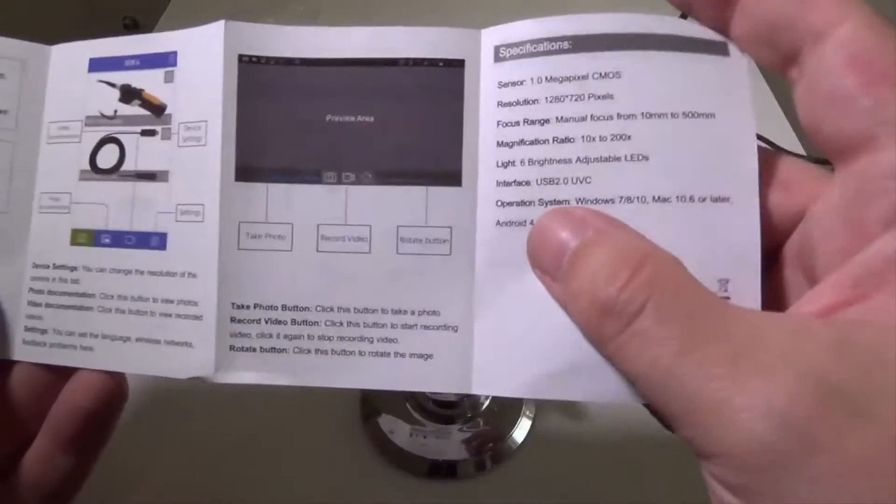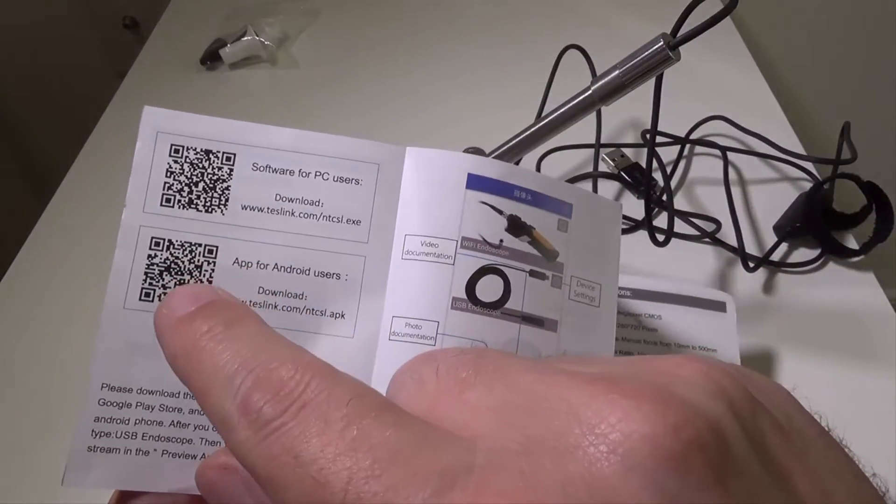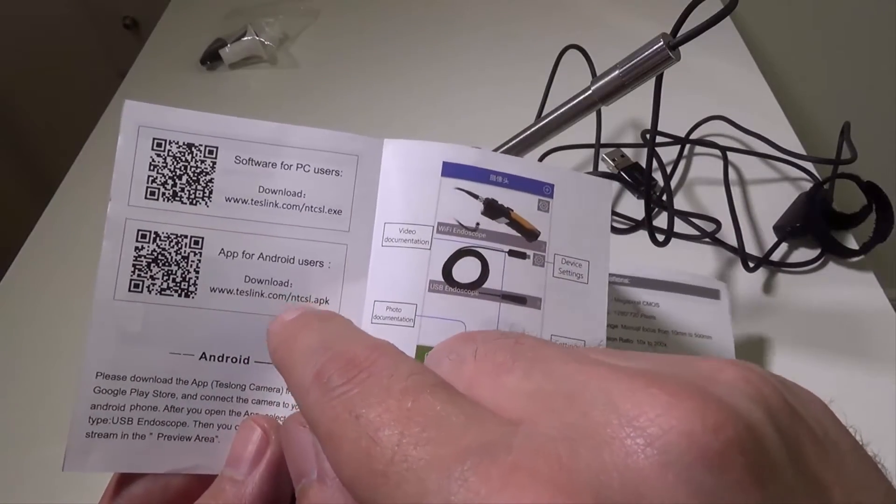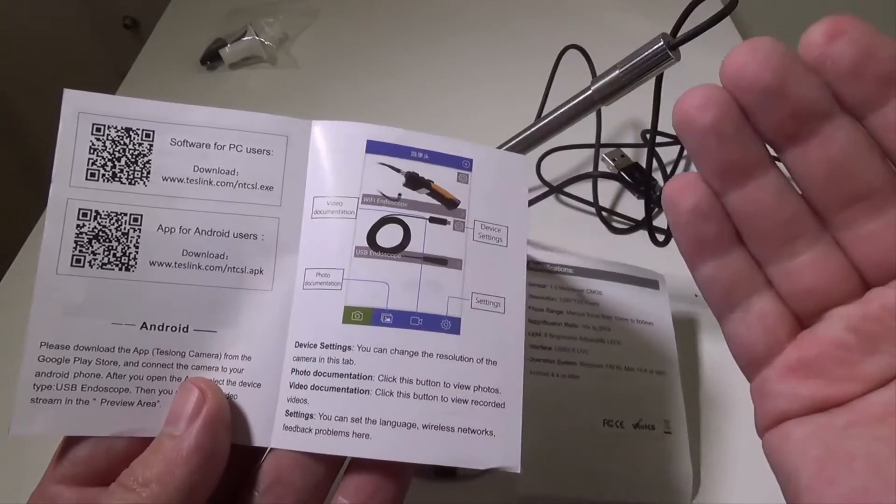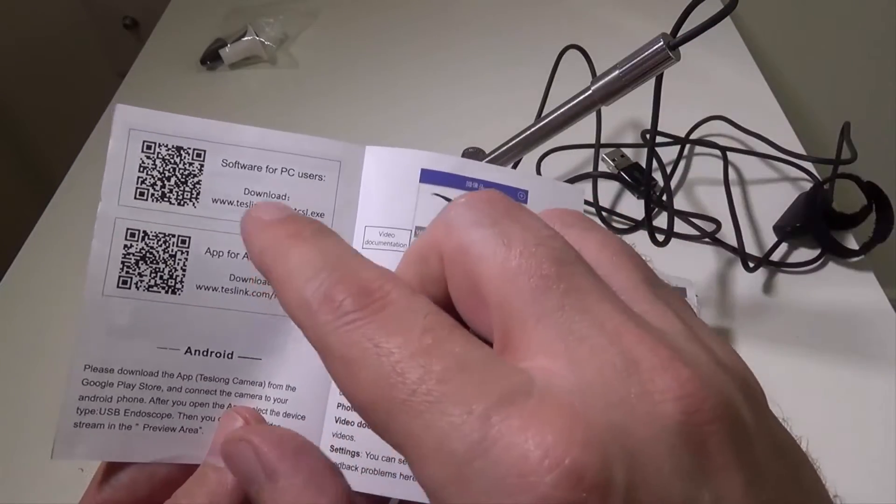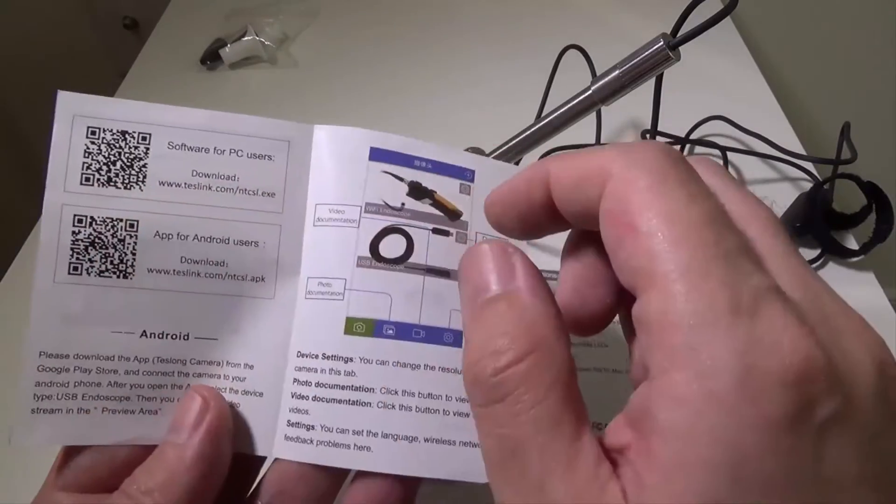Now this is good to hold on to, it just gives you the app for Android users if you want to. It's on the box as well, you can scan this code, it'll be the ntcsl.apk and it'll come up on your phone or Android device as test long. And then the software for PC users as well is right here.